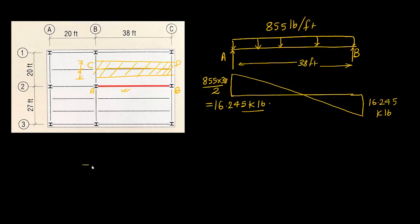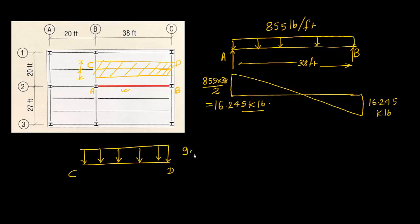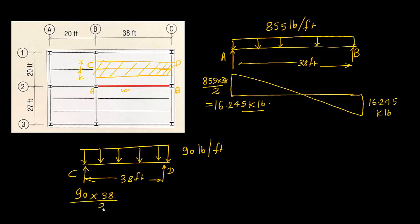We can show this distribution on beam CD with a uniformly distributed load of 900 pounds per foot. There will be reactions at each end. The reaction at each support is 90 times the beam length of 38 feet divided by 2, which gives 17,100 pounds.